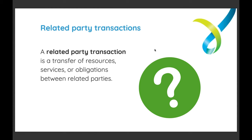So now that we know a bit more about what a related party is, what is a related party transaction? A related party transaction is any transfer of resources, services or obligations between a charity and a related party. For example, if a charity is looking to buy a vehicle and a board member's brother has one to sell, if the charity bought the vehicle from the board member's brother, that would be a related party transaction — the brother is a close family member and therefore a related party, and the sale of the vehicle is the transfer of resources.